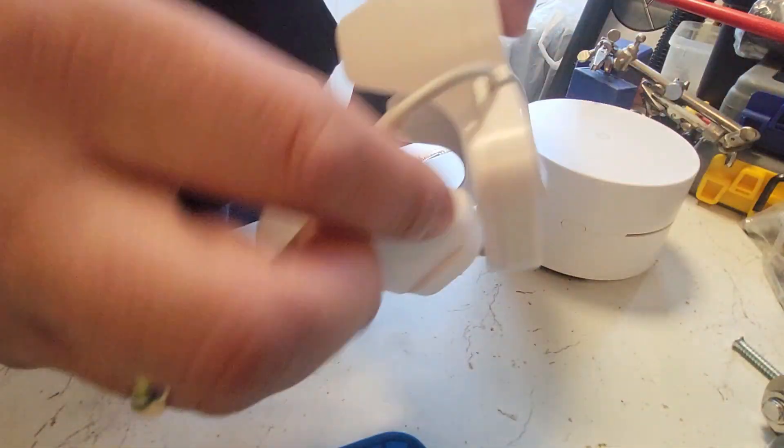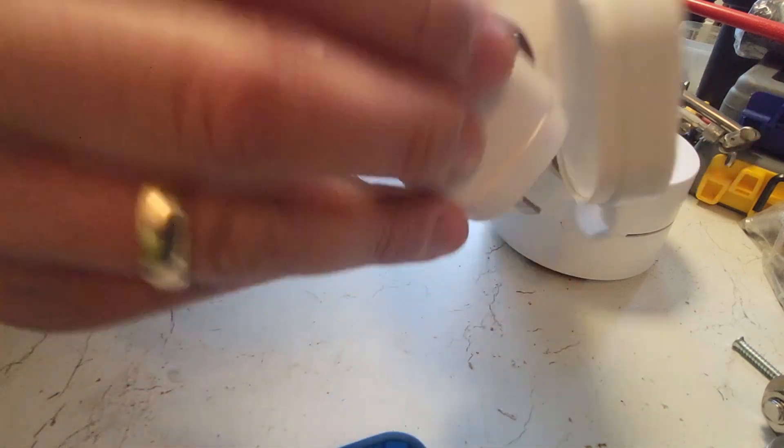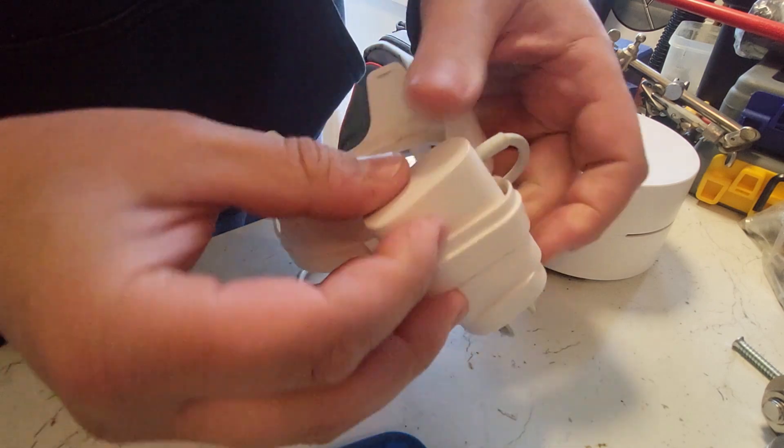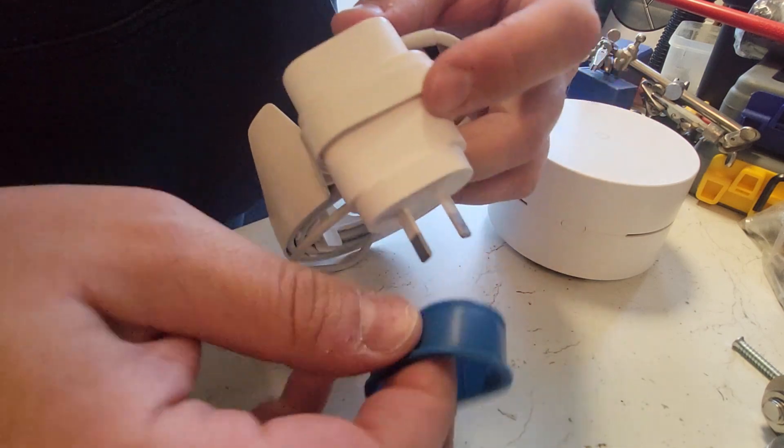You take your Wi-Fi bit, you can thread it through. I usually put this in first. So as you can see here, I would put this through first. Once you've put this through, then what you do is you take your little rubber grommet.